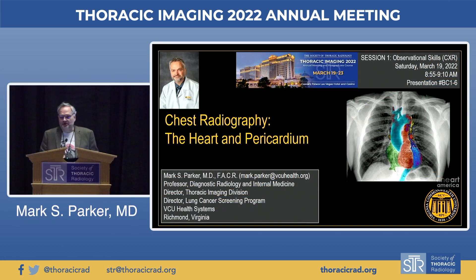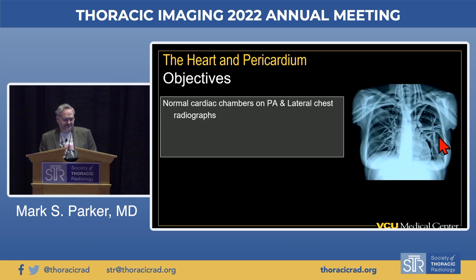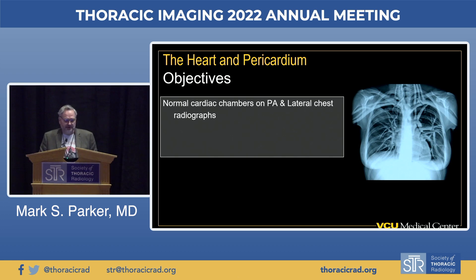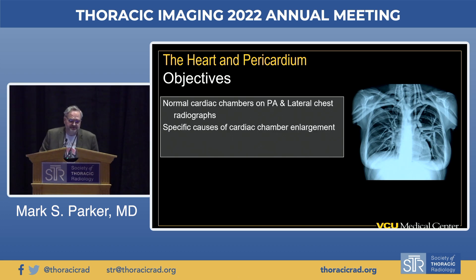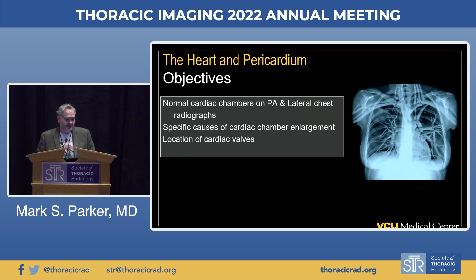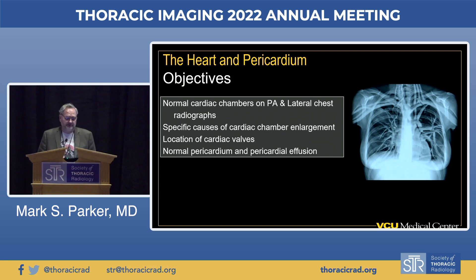Let's talk about the heart and pericardium and conventional chest radiography. We'll review normal cardiac chambers in both the frontal and lateral radiograph, discuss specific causes for cardiac chamber enlargement, describe location of the various cardiac valves, and briefly talk about normal pericardium and pericardial effusions on chest radiographs.